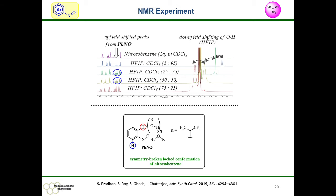For the NMR experiment, to see the effect of HFIP on nitroso-arene, we conducted an NMR experiment. Upon increasing the concentration of HFIP, a downfield shift of the OH proton was obtained and an upfield shift of nitrosobenzene protons was obtained. We reason this as the symmetry-broken locked conformation of nitrosobenzene upon coordinating with HFIP. This is indeed very strong proof for the activation of nitrosobenzene by HFIP.